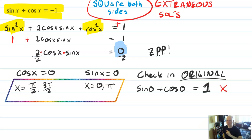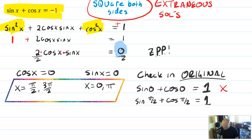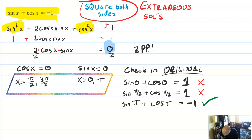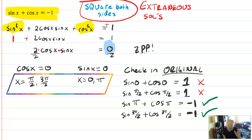Is sine of 0 plus cosine of 0 equal to negative 1? That's actually equal to positive 1, not negative 1 — so that's an extraneous solution. Sine π/2 plus cosine π/2: now sine is positive 1 and cosine is 0, so that's an extraneous solution too. But sine of π plus cosine of π: sine of π is 0 and cosine of π is negative 1, so that works. And sine 3π/2 plus cosine 3π/2: sine value is negative 1 and cosine value is 0, so we have negative 1 — that works.